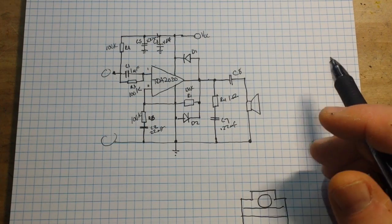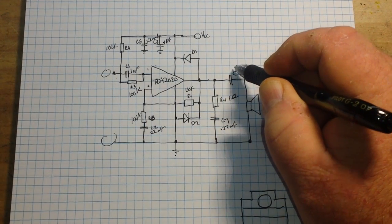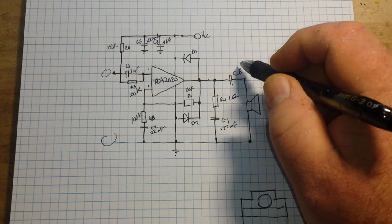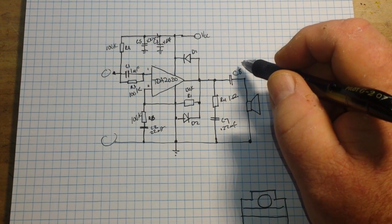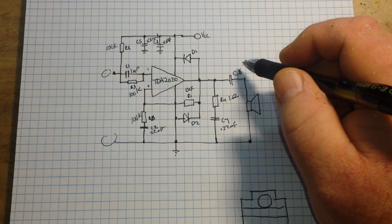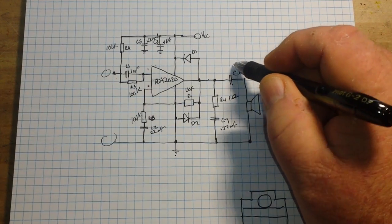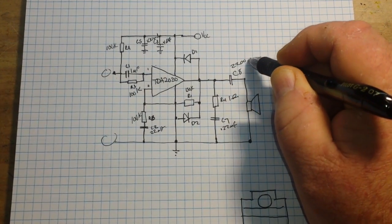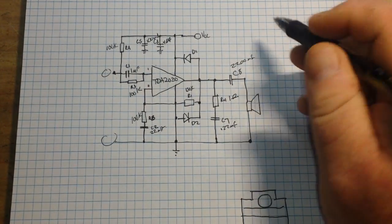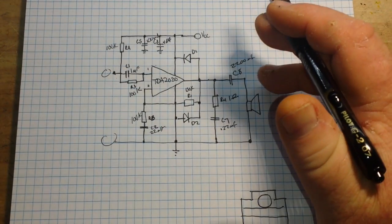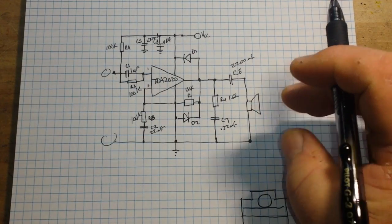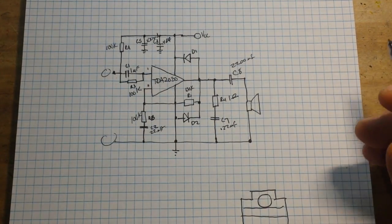And C8, this guy right here, is our upper frequency cutoff. It's going to be 2200 microfarad, probably could go up to 3300. If you increase it, you decrease your bandwidth. If you decrease it, you increase your bandwidth.